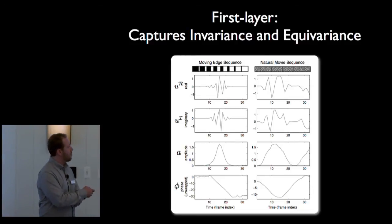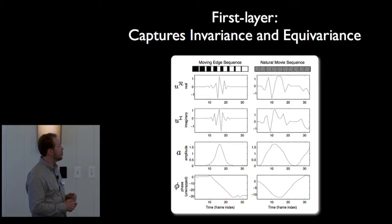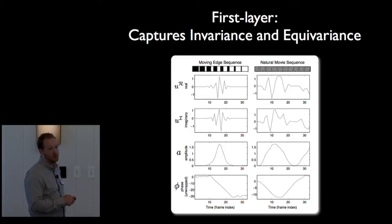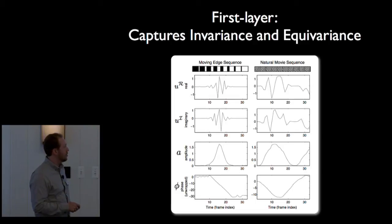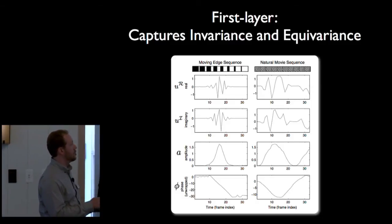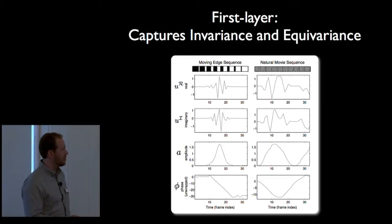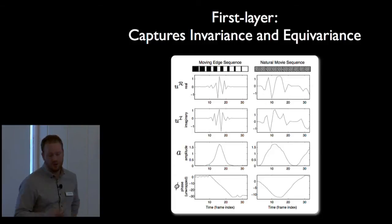Let me go over a few things about the model during inference. The factorization tears apart parts of the form and motion information in the first layer. With a sharp edge sequence, if I infer the U variables and the A and phi variables, those U variables are very fast-changing and look complicated and jagged. But the amplitude of the pair is very smoothly changing, and the phase variable is also smoothly changing — just a linear ramp. This also holds in natural scenes: looking at a natural movie sequence, we see these same types of smooth trajectories. These very smooth dynamics we're going to utilize in the second layer.